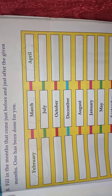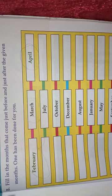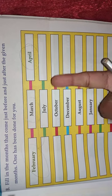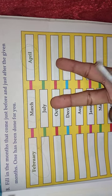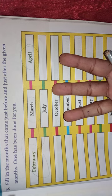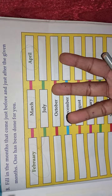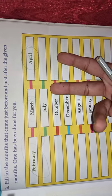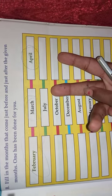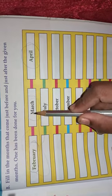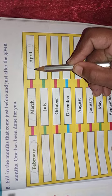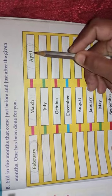The month names start from January. January, February, and March. This is March. So before March comes February, and after March comes April. You have to fill in February before and April after.